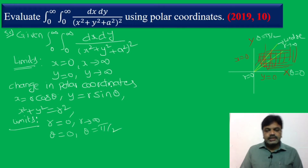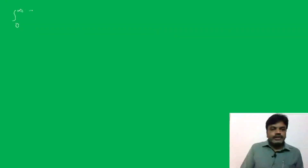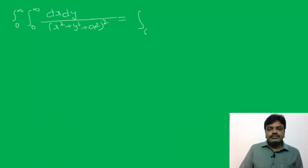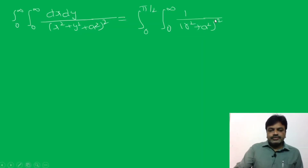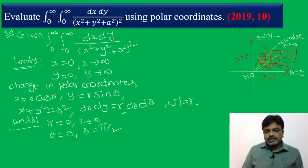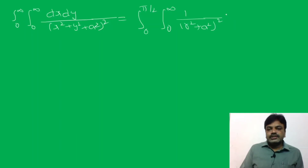Now substitute into the given problem. The integral from 0 to infinity, integral from 0 to infinity of dx dy upon (x² + y² + a²)² equals integral from θ = 0 to π/2, r = 0 to infinity of 1/(r² + a²)² times r dr dθ. Here dx dy in polar coordinates is written as r dr dθ, where r is the Jacobian value.